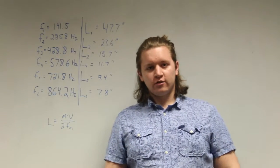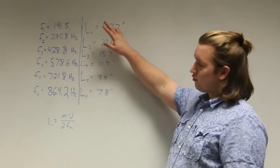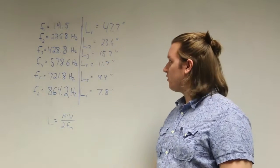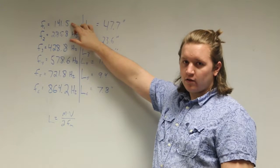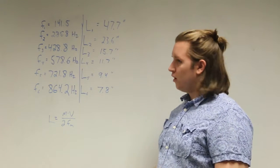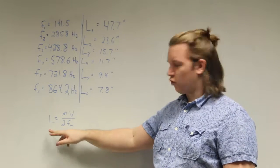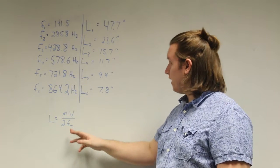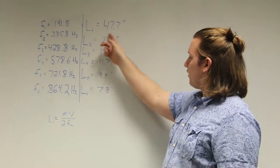From the Fourier transform that Sophie just showed you, we got this data after averaging hitting the tube five times. From the fundamental length, which was the lowest frequency we found, we rearranged the open-open formula to L equals NV over 2F. We found the hypothetical length of the tube is 47.7 inches.